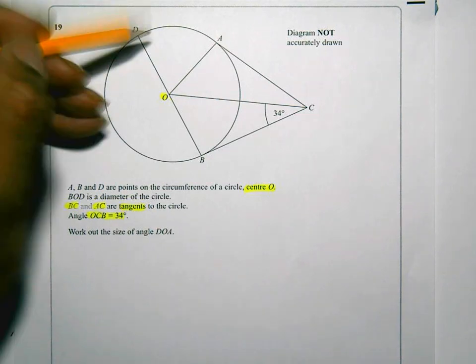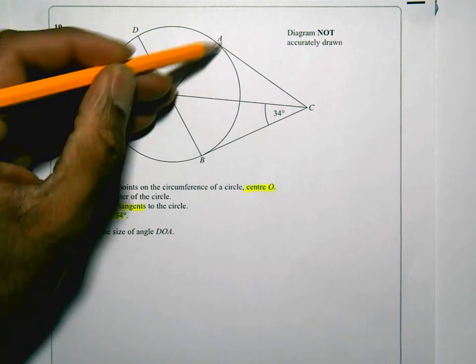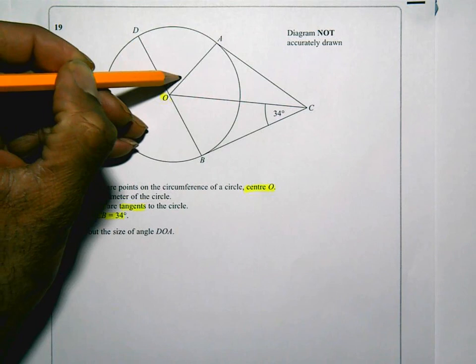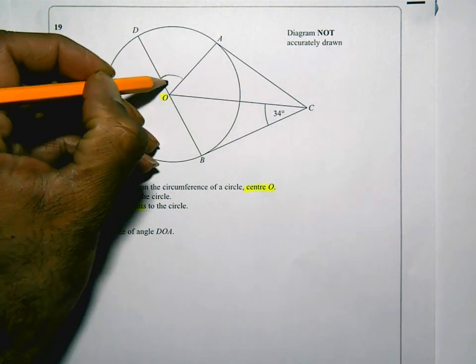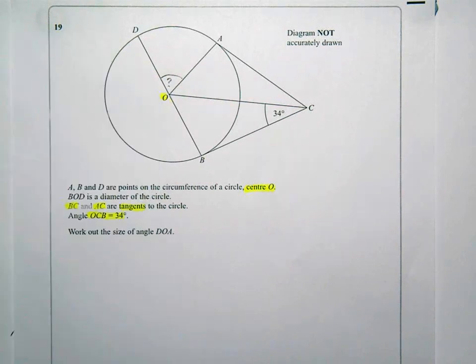Let's find that. DOA. So that's going to be that angle there. That's what they want us to find. A little mark in there. So I know what I need to do.